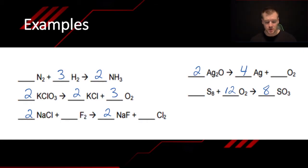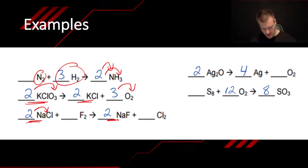Okay, so let's take a look. The first one is one, three, and two. There are two nitrogens. There are two nitrogens. There is six, three times two hydrogens, and two times three, six hydrogens over there. The next one, we see two KCl, two KCl. We have two times three is six oxygens, and three times two is six oxygens. So that one's balanced. Next one, we look at two Na's, two Na's, two Cl's, two Cl's, two F's, and two F's.